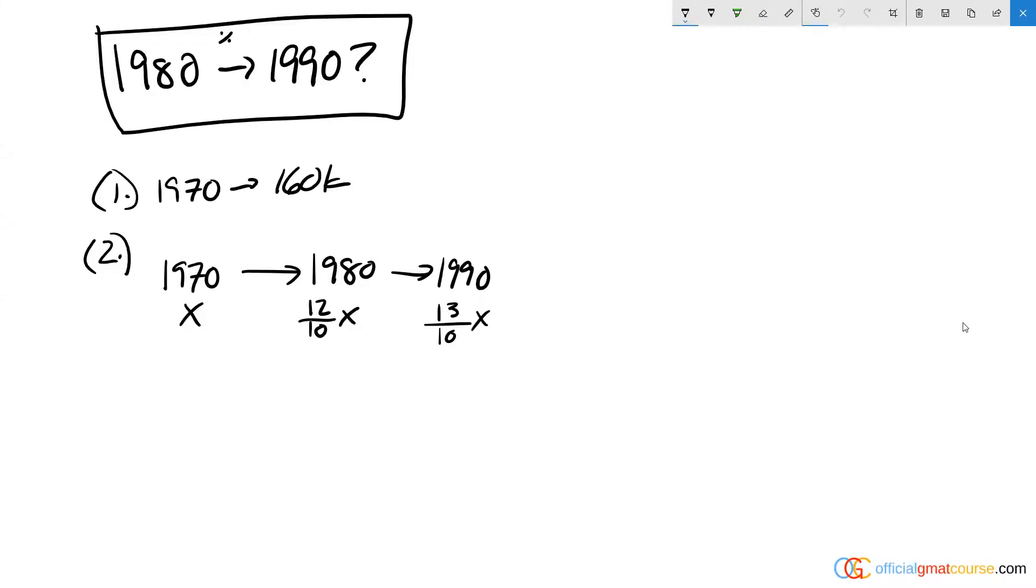So our job is to identify here if we can get this down to exactly one number for the exact percentage increase in the population of City K between 1980 and 1990.